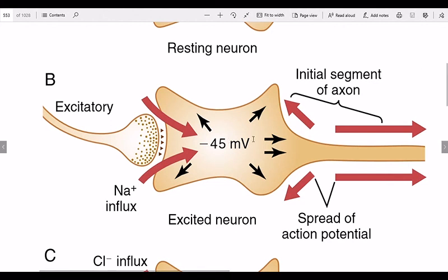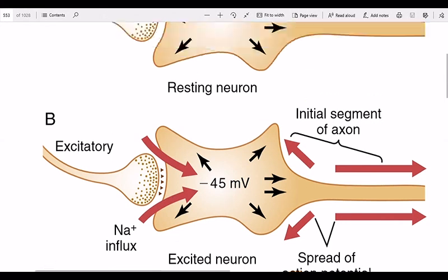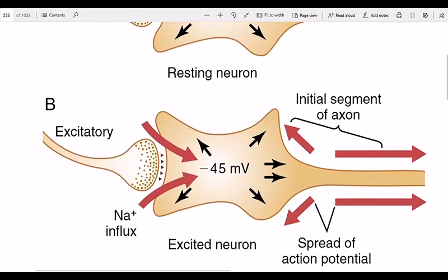We get a positive result — the membrane potential becomes less negative, moving toward positive values. This excited state reaches approximately minus 45 millivolts, which is our excited or threshold state — the excitatory postsynaptic potential.